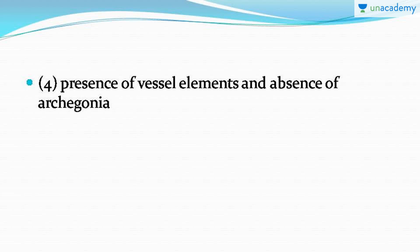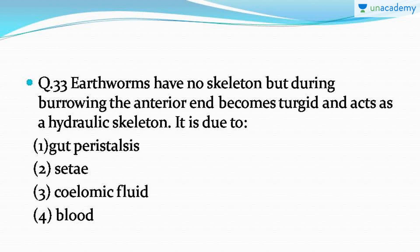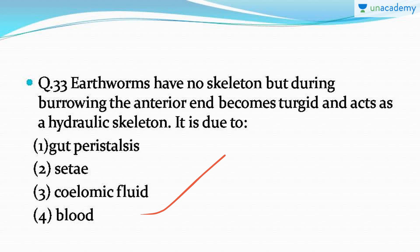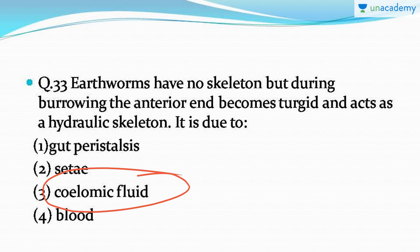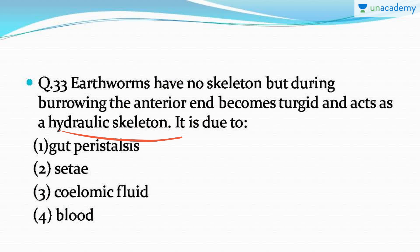Question number 33: earthworms have no skeleton, but during burrowing the anterior end becomes turgid and acts as a hydraulic skeleton. What is the reason for this? The correct answer is option number three: coelomic fluid. Whenever the earthworm tries to burrow, the coelomic fluid collects at the anterior end, making it turgid and allowing it to act as a hydraulic skeleton.